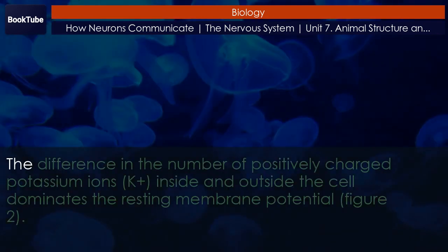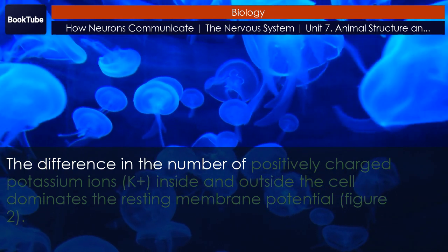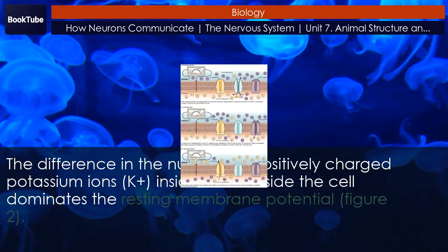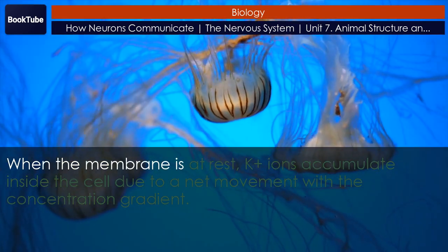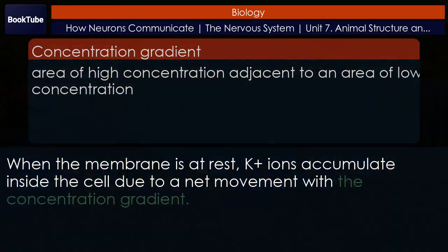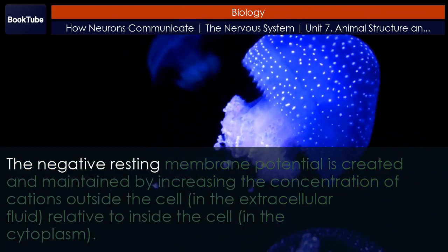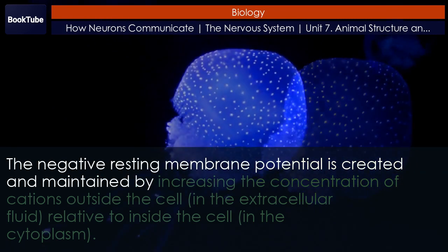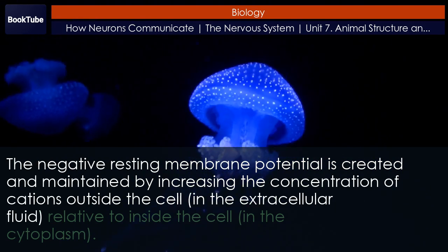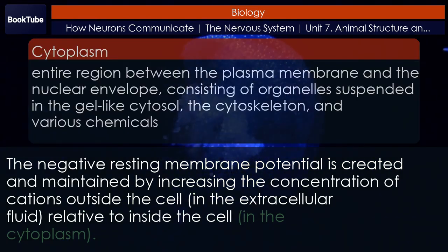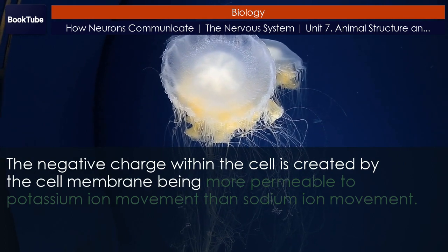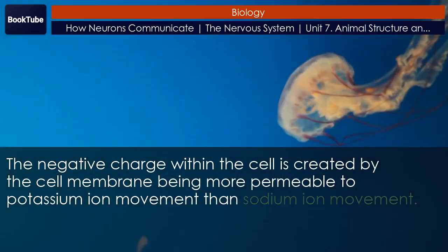As shown in Figure 2, the difference in the number of positively charged potassium ions (K+) inside and outside the cell dominates the resting membrane potential. When the membrane is at rest, K+ ions accumulate inside the cell due to a net movement with the concentration gradient. The negative resting membrane potential is created and maintained by increasing the concentration of cations outside the cell in the extracellular fluid relative to inside the cell. In the cytoplasm, the negative charge within the cell is created by the cell membrane being more permeable to potassium ion movement than sodium ion movement.